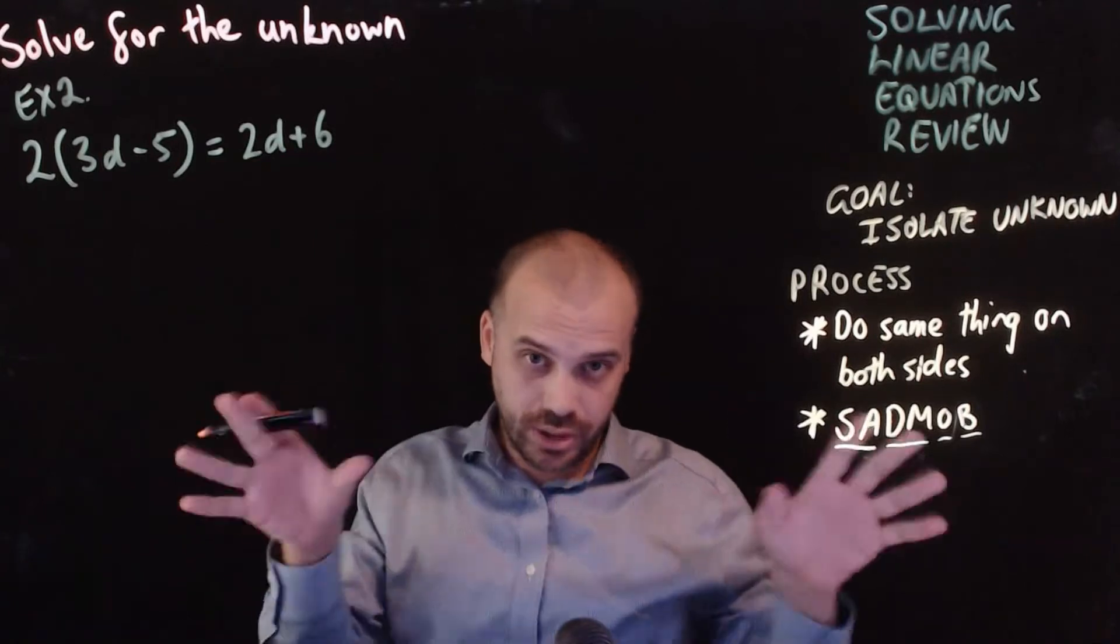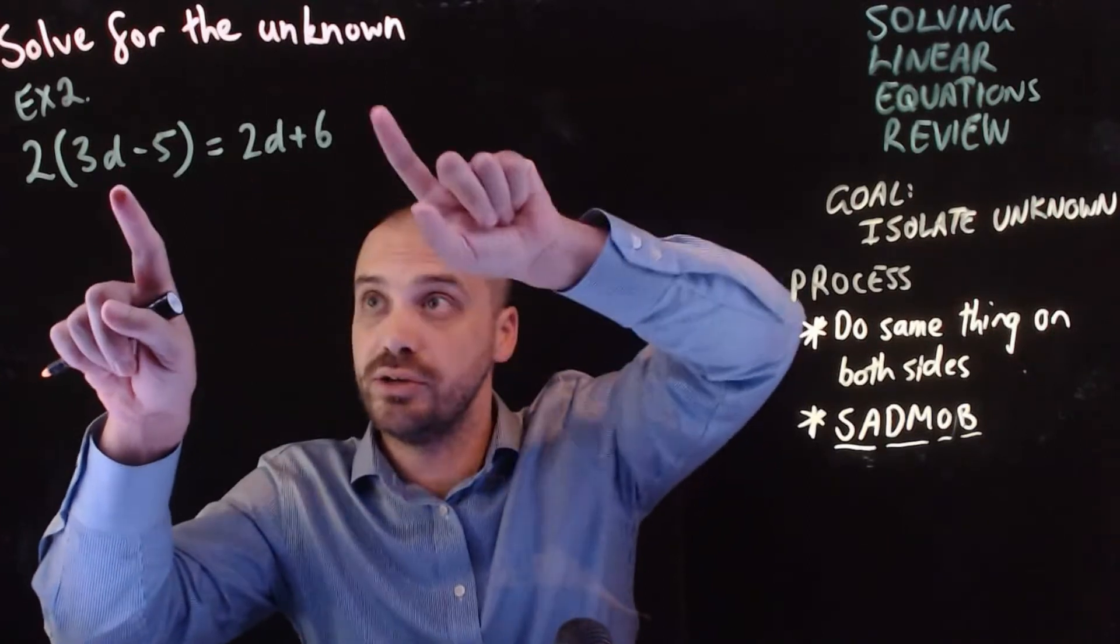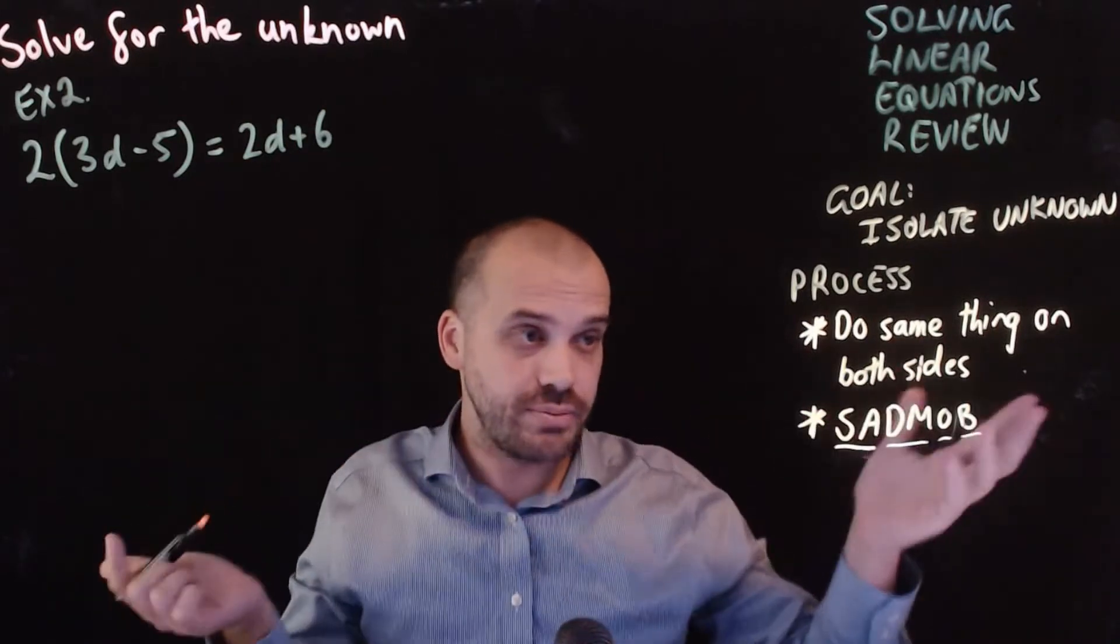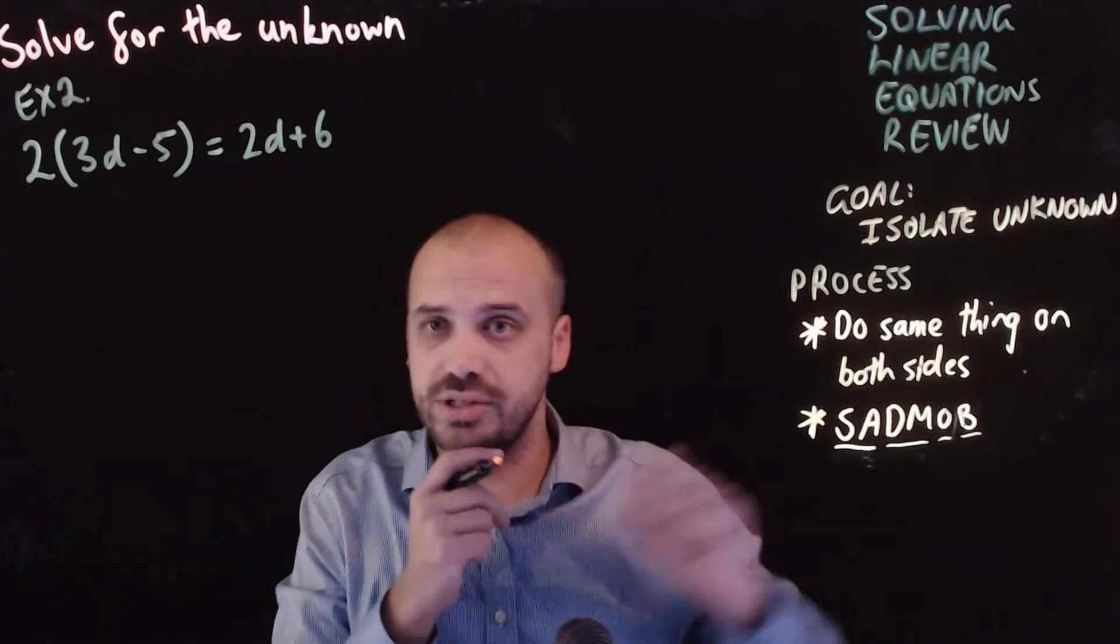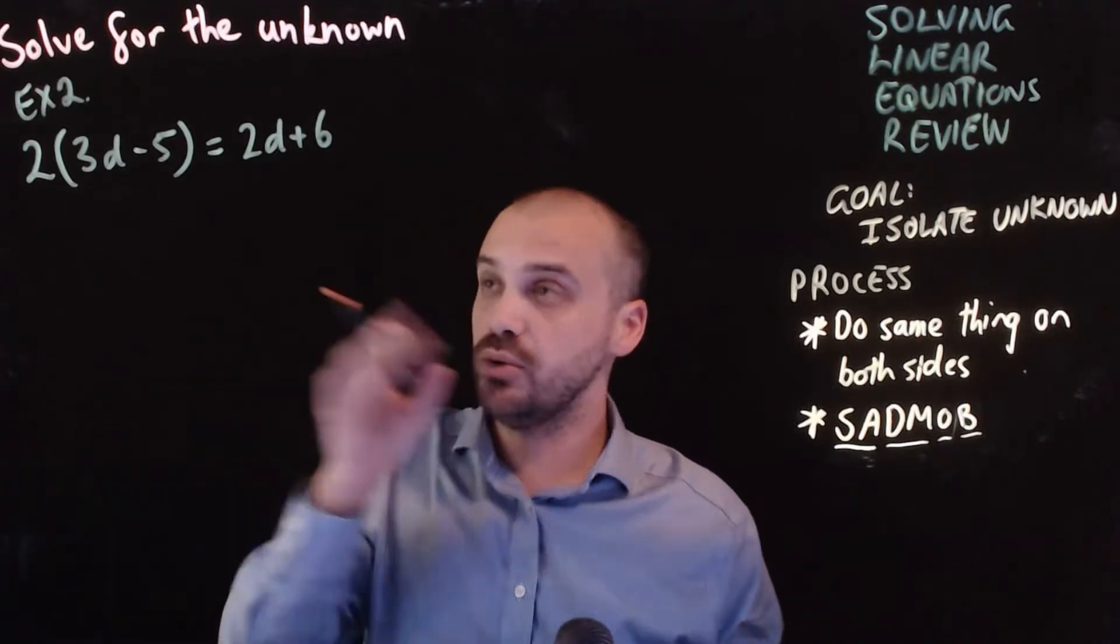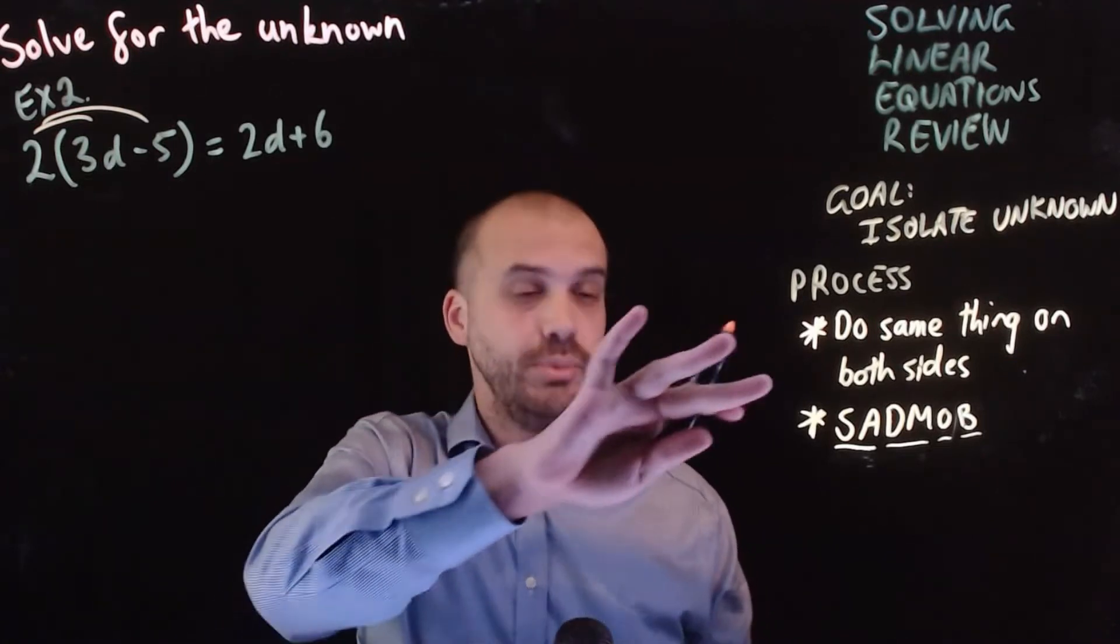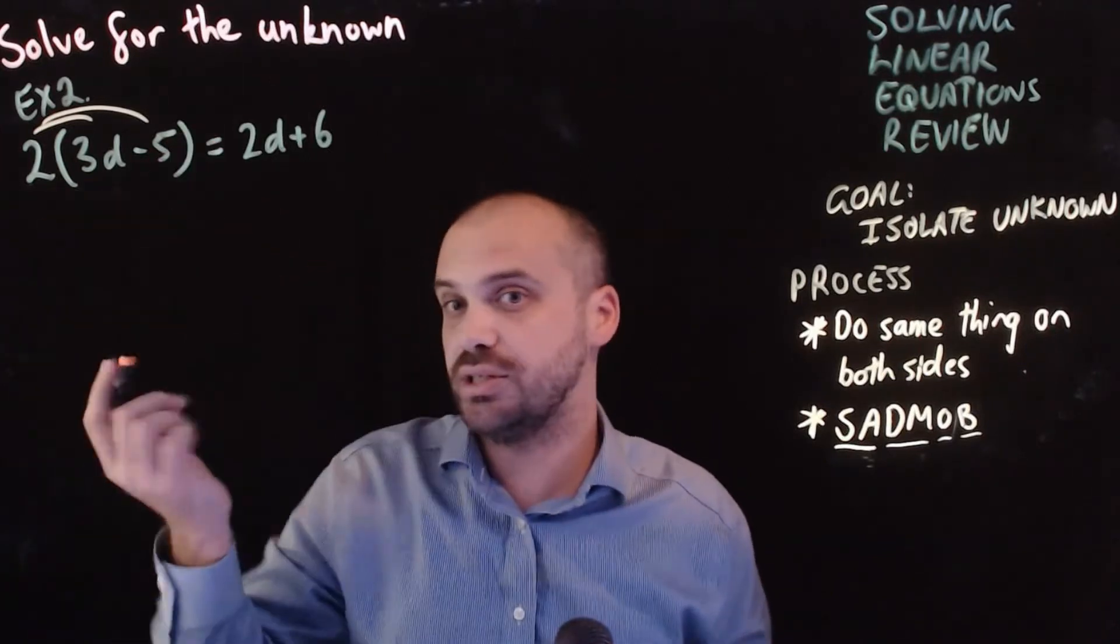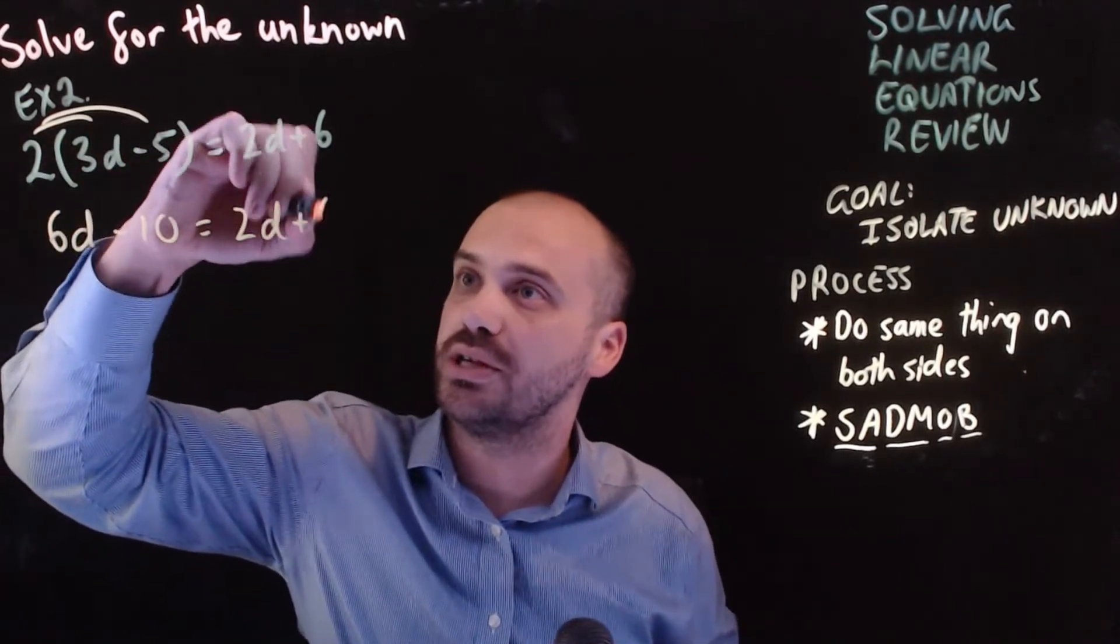All right. So, with this question, there's more than one way to do it. I'm going to do it both ways. Now, our goal is to isolate the unknown. You can see the unknown is on the left-hand side and the right-hand side. So, we need to get it all onto one side eventually. All right. We need to do the same thing on both sides. I'm going to break that rule. And you'll see why in a second. And we need to follow this order here. All right. So, the first thing I'm going to do is I'm going to see these brackets here. And I'm going to say, oh, I could expand those brackets using the distributive law. Now, you'll notice I'm not doing the same thing on both sides because I'm not actually doing anything. I'm just rearranging this left-hand side. So, that becomes 6d minus 10 equals 2d plus 6.